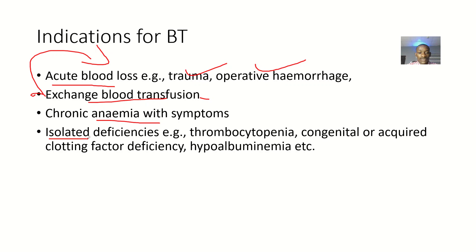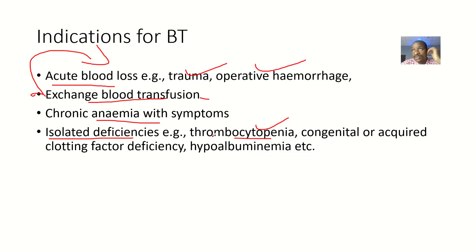Also, if there are some isolated deficiencies, like the person has thrombocytopenia — that is reduced levels of platelets — or the person can have congenital or acquired clotting factor deficiency, like von Willebrand disease or hemophilia, as you need these clotting factors, you can opt in for blood transfusion. But the gold standard right now is to concentrate what you need from blood and give just what you need.